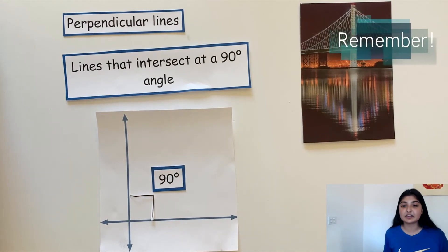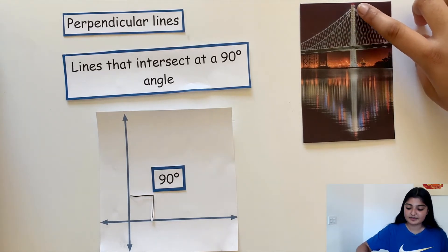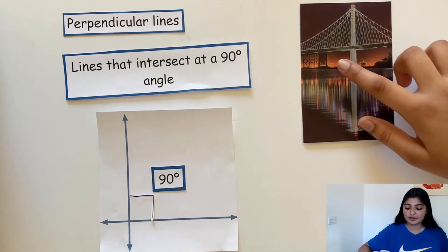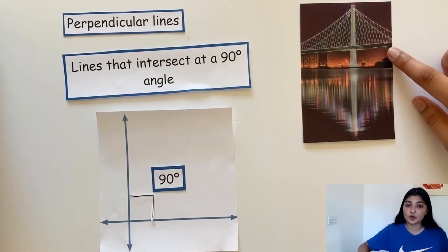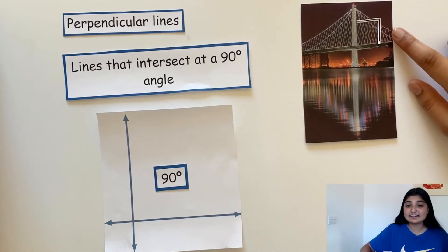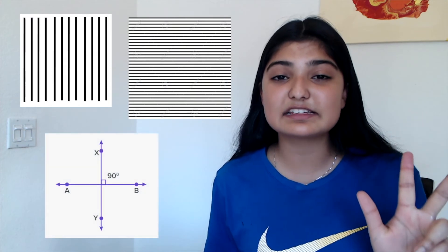Any two lines that meet and form a 90 degree angle are called perpendicular lines. Remember our bridge? This column is a vertical line, which meets the road, a horizontal line, and forms a 90 degree angle. So this is a cool example of perpendicular lines. Now, we've looked at vertical lines, horizontal lines, and perpendicular lines.